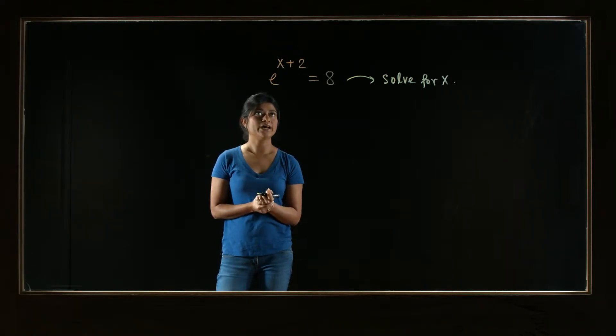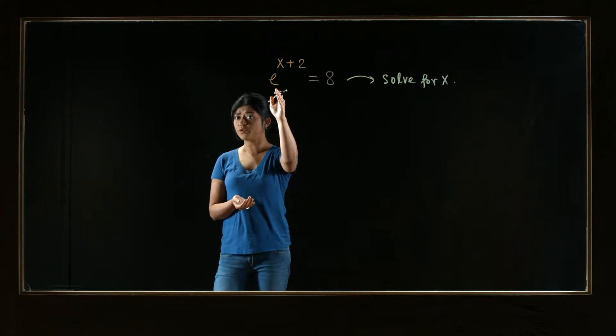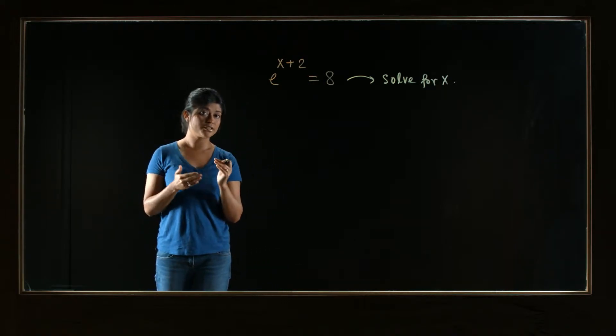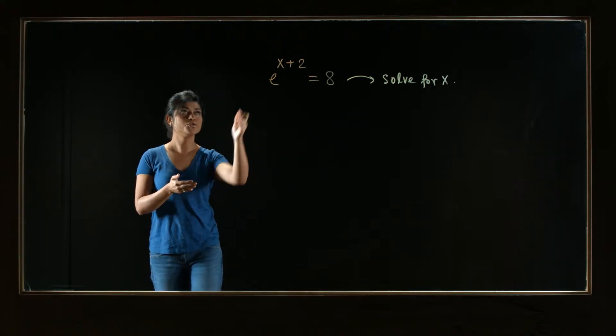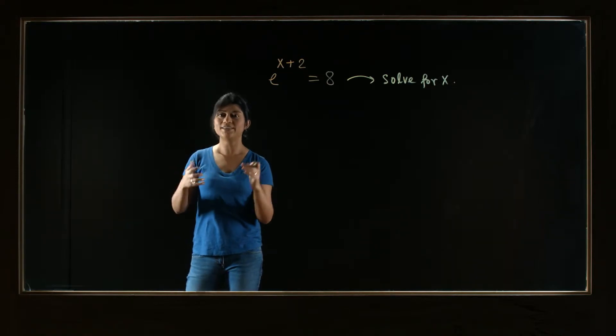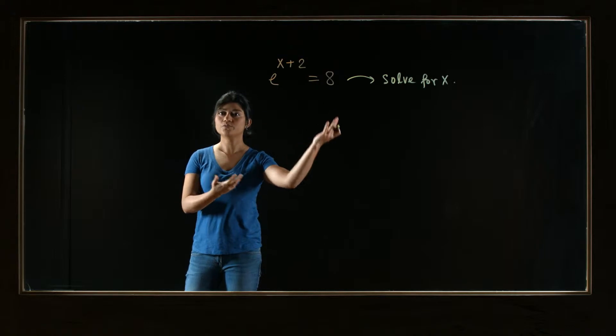So how do we do that? Notice that this is an exponential function, and we also know that the natural logarithm function is the inverse to the exponential function. So maybe we can apply some properties, the inverse property, to solve this problem.